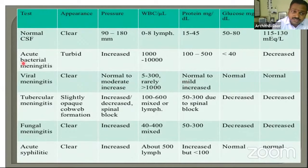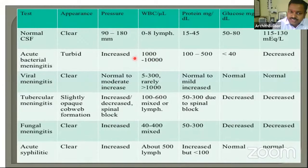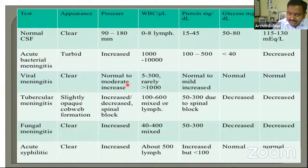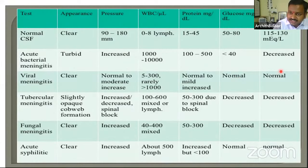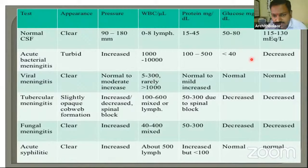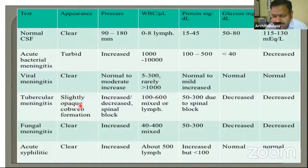In bacterial meningitis, cells are predominantly neutrophilic in early stages (may exceed 10,000), protein is very elevated, glucose is low, and chloride is low. In viral meningitis, pressure is increased, cells are increased but not very high, protein is normal to mildly raised, glucose is normal, and chloride is normal — viruses do not consume glucose. In tuberculous meningitis, there is characteristic cobweb formation due to elevated protein, lymphocytes predominate (cell count under 1000), protein is very elevated, glucose is decreased, and chloride is decreased.